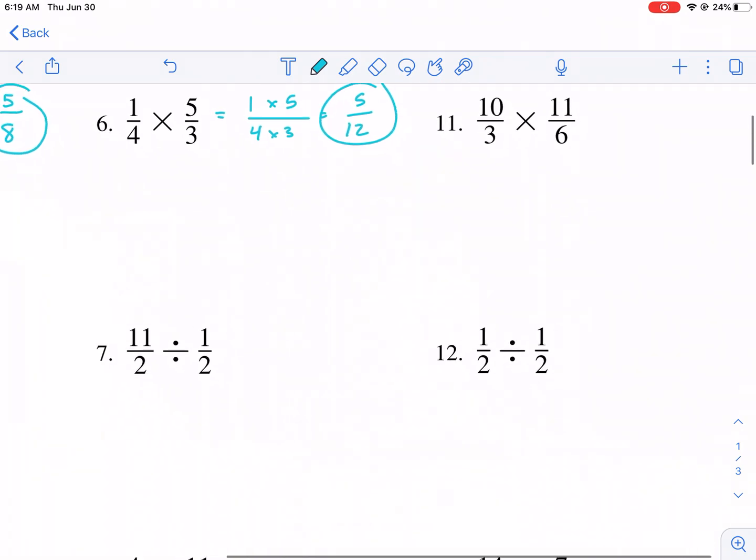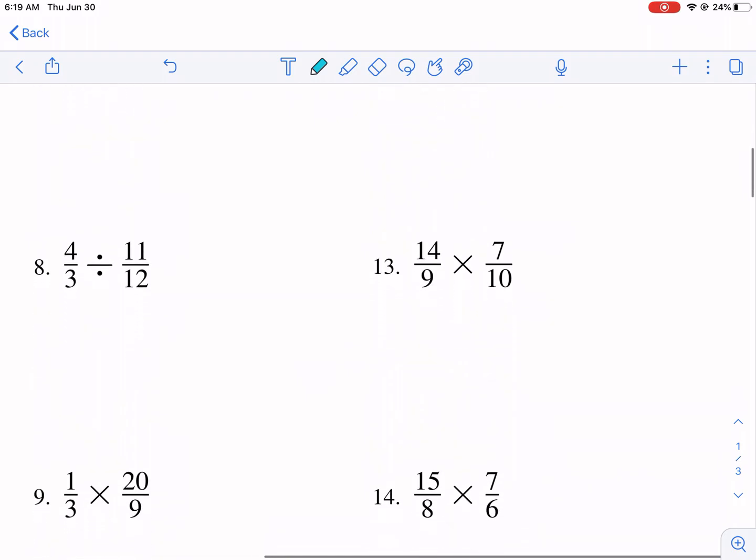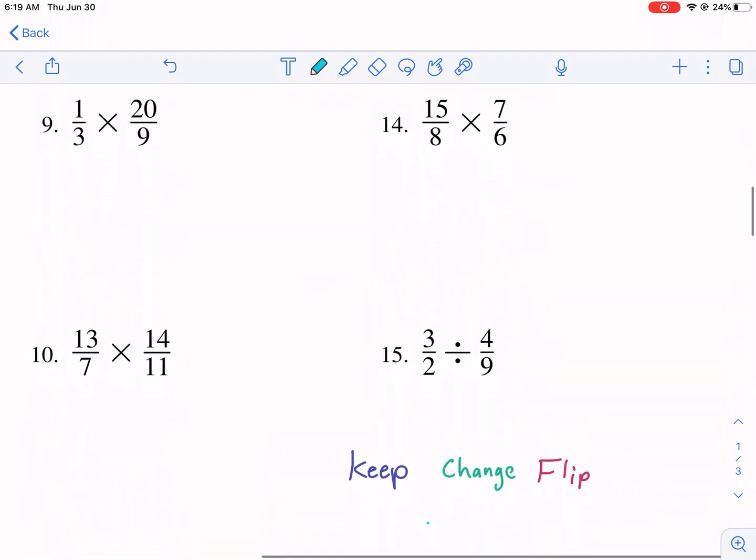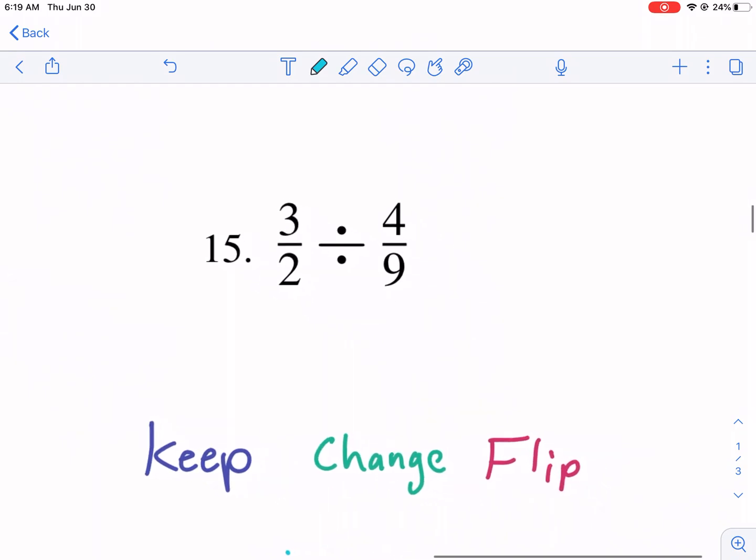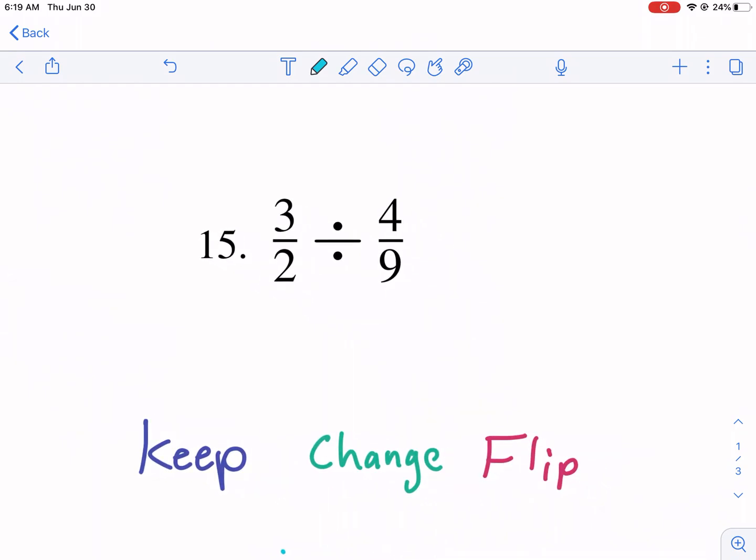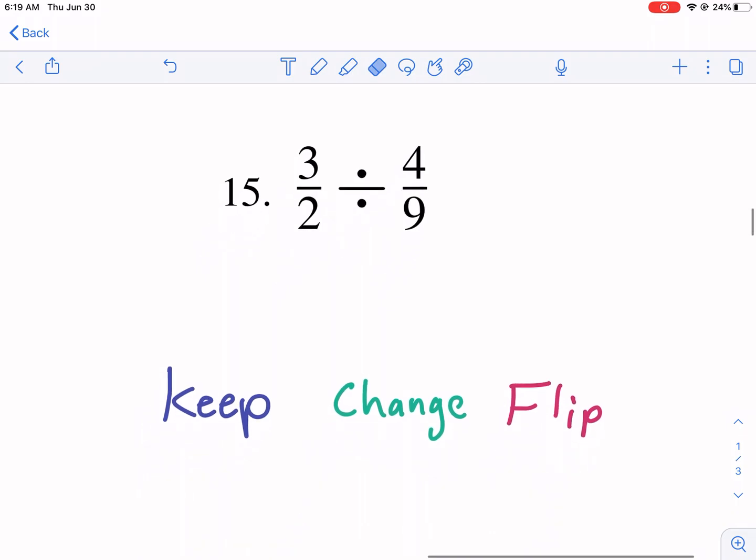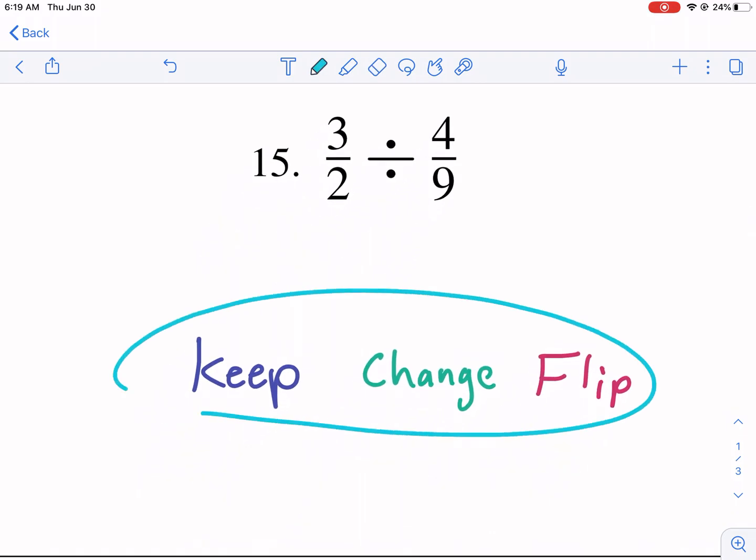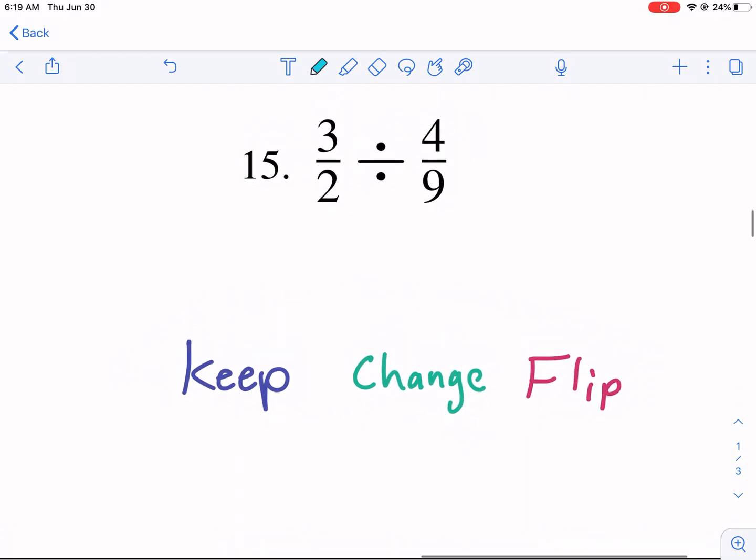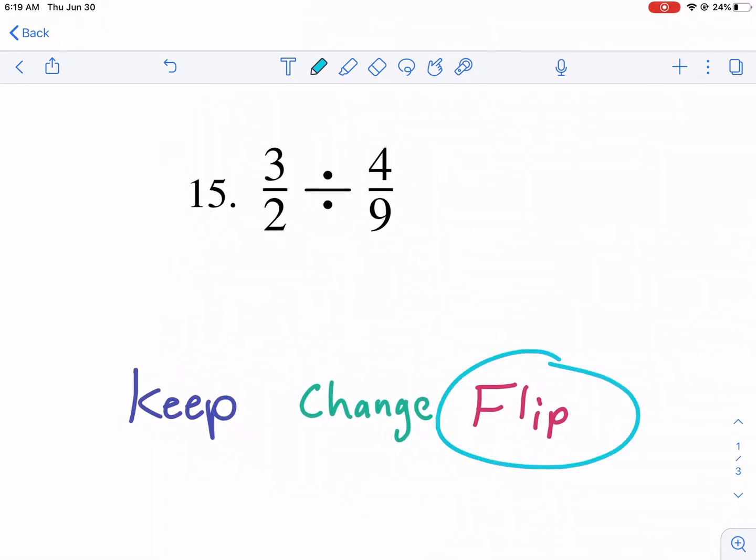Now, before I get into how do we simplify if it's not lowest terms, let's take a look at some division. So with division, our process is fairly simple. Now you're thinking, oh, well, do I do a division? We are going to change it to multiplication first. How do we change it to multiplication? We use this process: keep, change, and flip. Now, the reason why we can keep, change, flip is because this flip part means we're going to change it to the reciprocal because dividing is equal to multiplying by the reciprocal. So dividing is the same thing as multiplying by the reciprocal. So that's why we can use keep, change, flip.